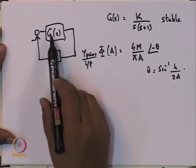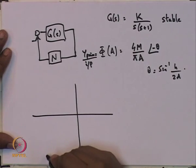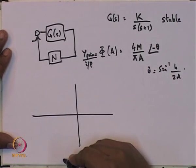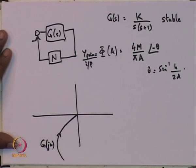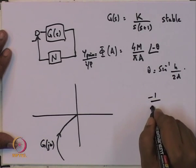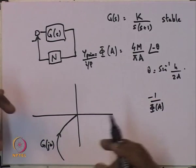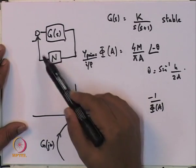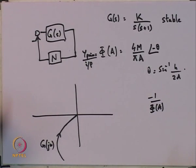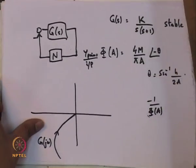We look at the Nyquist plot of G(jω) and also plot minus 1 divided by phi(A). Wherever these two plots intersect, they give us the values specifying what kind of limit cycle exists in the system. Let us see what this minus 1/phi(A) looks like by plotting several things.